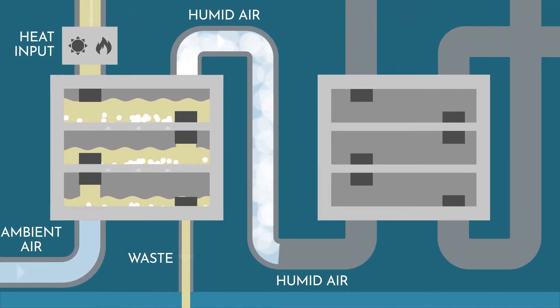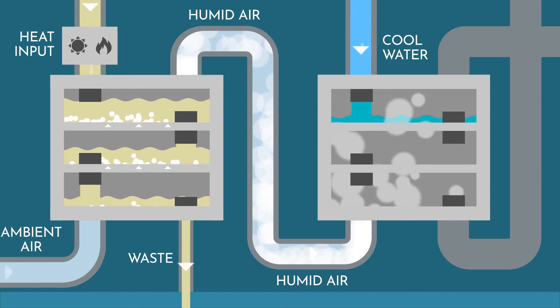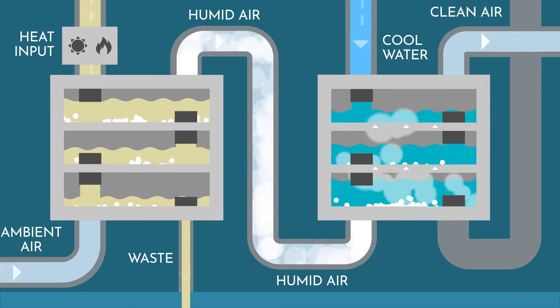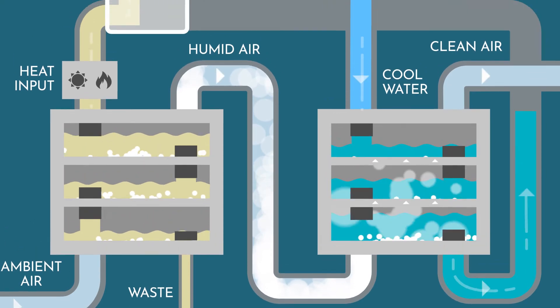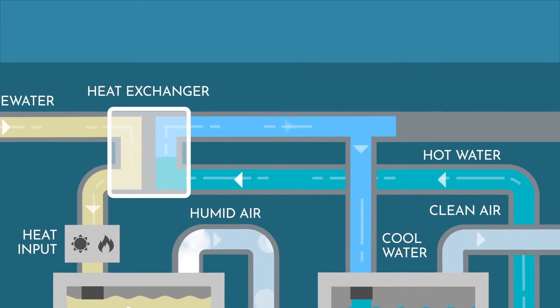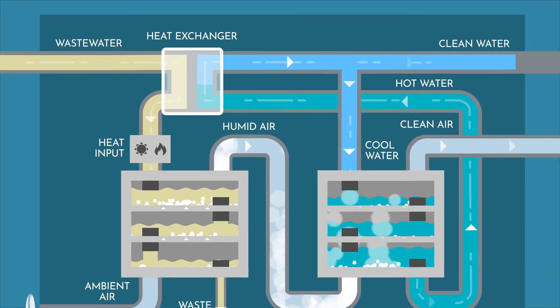The hot, humid air is transferred to the bottom of the dehumidifier, a proprietary multi-stage bubble column, while cool, clean water is introduced at the top. When the hot air and water interact, the air cools and drops fresh water, like a cloud dropping rain. The clean, heated water gets recirculated back through the heat exchanger to help warm the incoming wastewater and reduce the overall energy consumption.